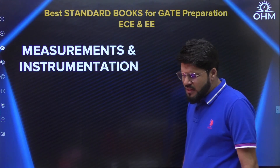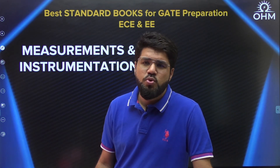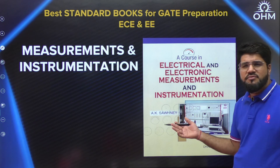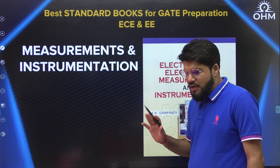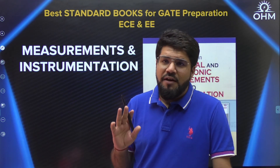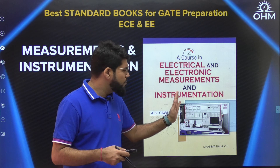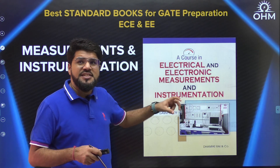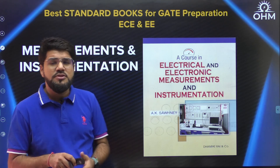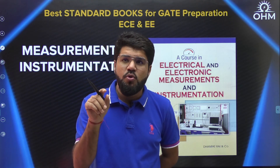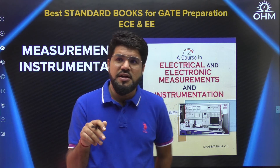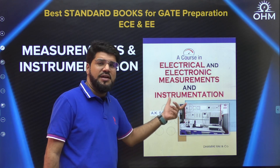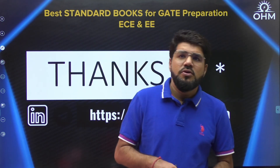Coming to the last core subject — Measurements — which has very less weightage per current trends: about two to three marks expected. One book is sufficient, normally the book students use in semesters too: the book by A.K. Sawhney. But note — Measurements is a less weightage subject, so spend less time here. The problem with this book is it has a lot of content and many things not in the GATE syllabus. You should identify the more important areas, match with the GATE syllabus, and only study those specific topics.